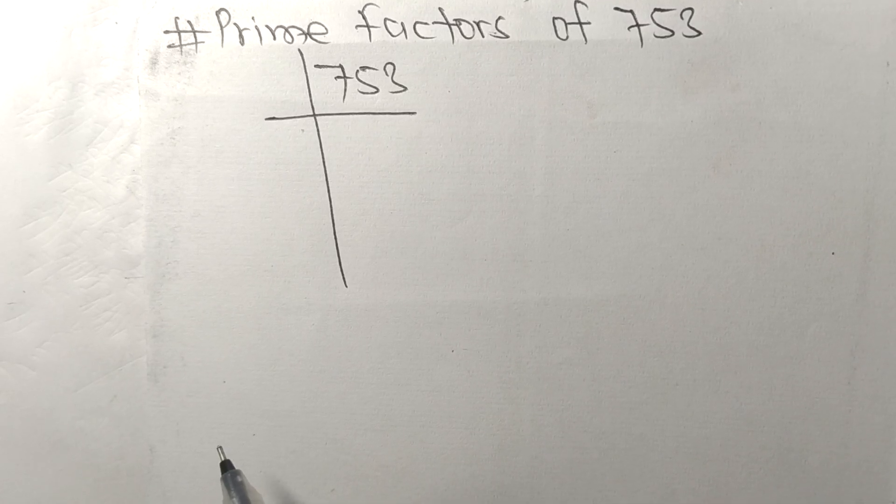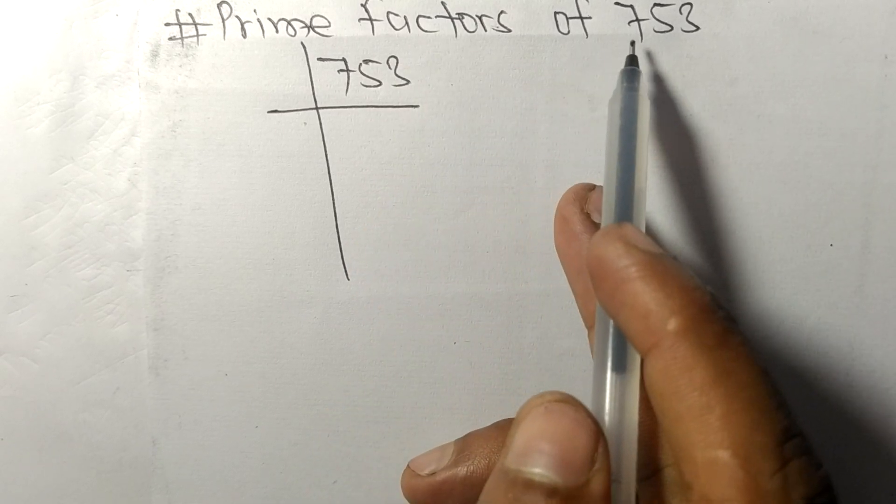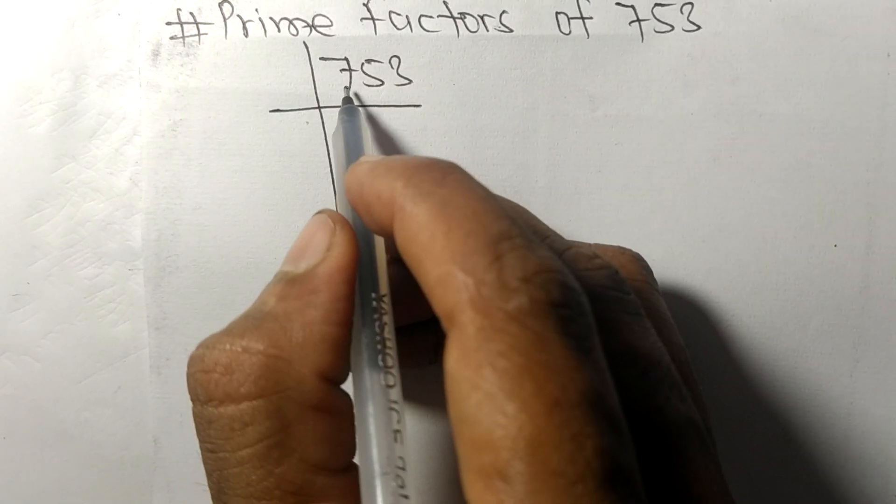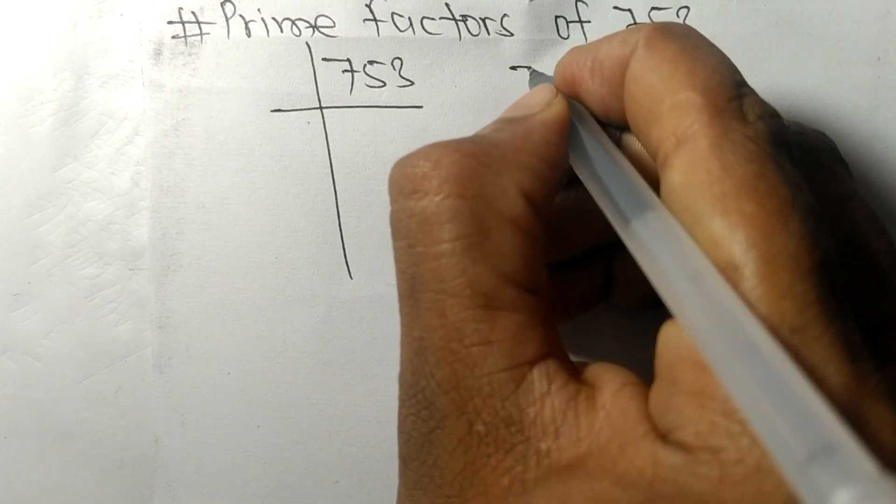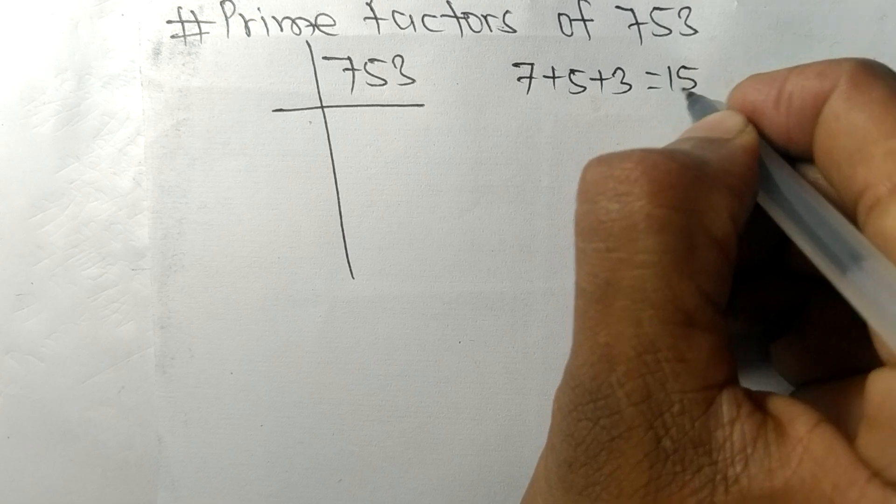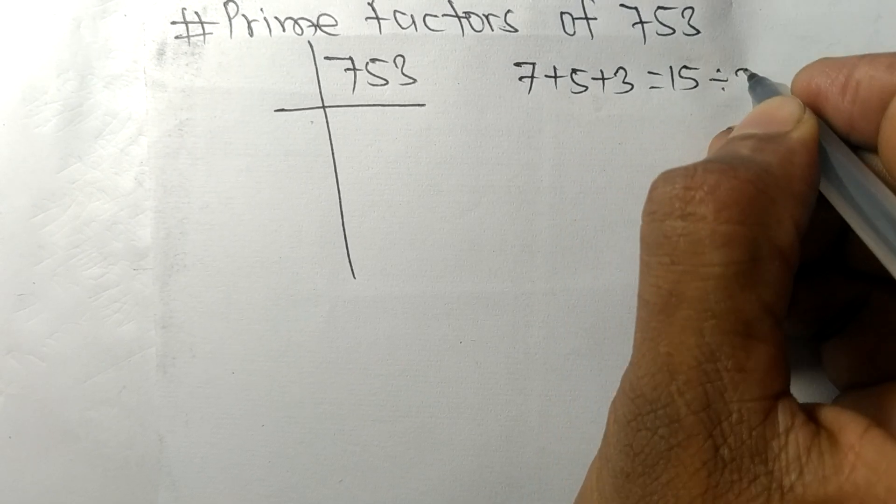So today in this video we shall learn to find the prime factors of 753. When we add all these numbers, that is 7 plus 5 plus 3, then we get 15, and 15 is exactly divisible by 3.